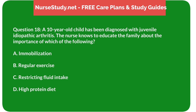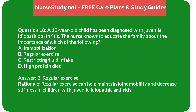Question 18: A 10-year-old child has been diagnosed with juvenile idiopathic arthritis. The nurse knows to educate the family about the importance of: A) immobilization, B) regular exercise, C) restricting fluid intake, D) high protein diet. Answer: B) regular exercise. Rationale: Regular exercise can help maintain joint mobility and decrease stiffness in children with juvenile idiopathic arthritis.